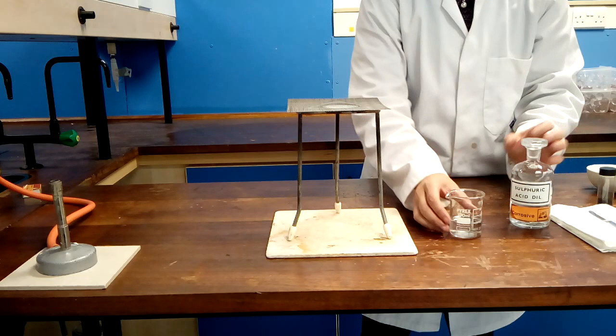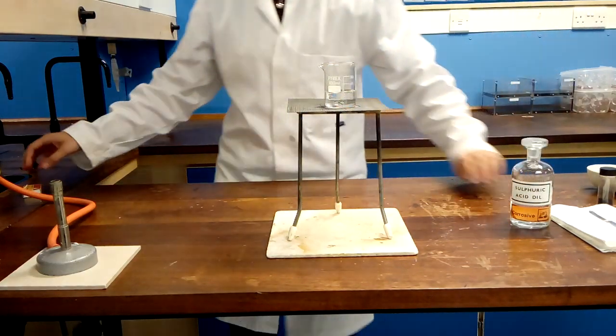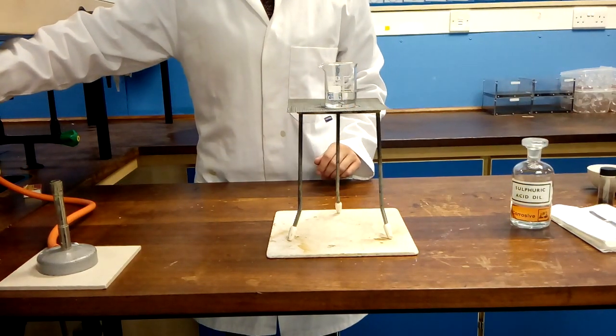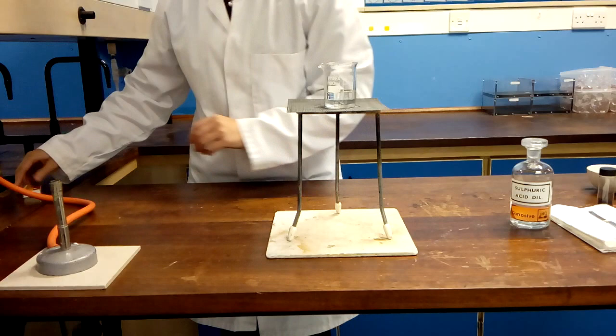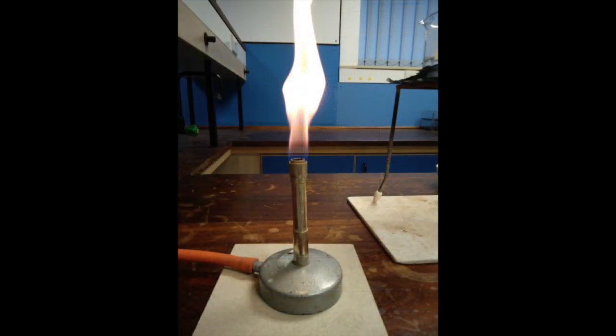The acid needs to be heated using a Bunsen before we add the copper oxide. Set up the heatproof mat, tripod and gauze and place your beaker of acid on top. Before you light the Bunsen you must make sure that it is set to the safety flame. This means that the collar must be closed. Here you can see a closed collar and an orange safety flame.